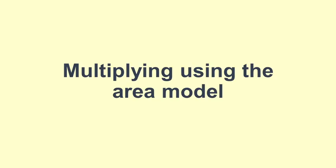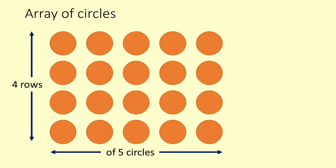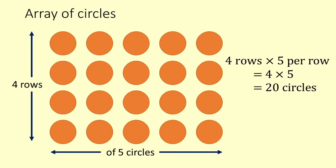The basis for the area model of multiplication is that multiplication is used to find the number of elements in a rectangular array. Here is a rectangular array or arrangement of 20 circles. There are 4 rows and each row has 5 circles in it. We can count to see that there are 20 circles. And we also know that 4 lots of 5 make 20. 4 times 5 equals 20.